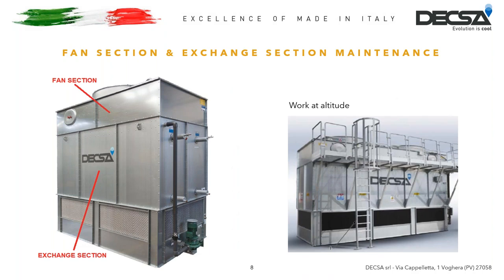Now let's move on to the control of the exchange section and the fan section. I unified both sections because to carry out the various checks the entry point is the same — the inspection door located on the fan section. To get there, if there is no ladder and platform installed on the unit — a component we can supply on request as an option for new units or as a spare — it is necessary to use a lifting platform. Since it's work at height, you need to have the necessary PPE: safety belts, helmet, etc.